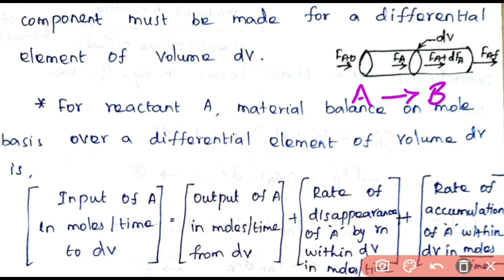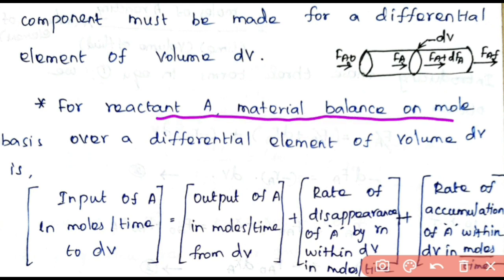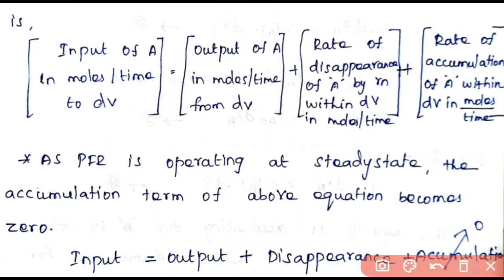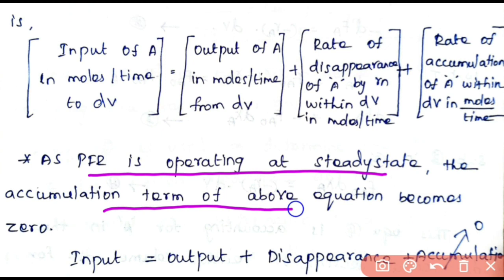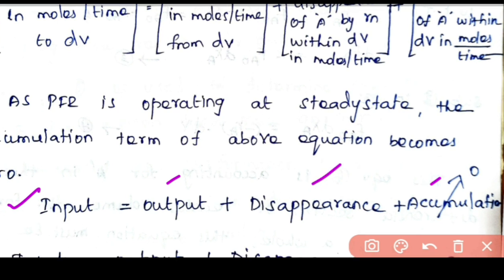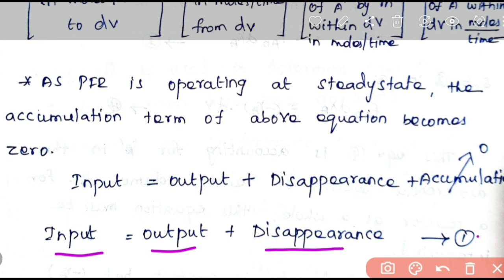To derive the performance equation, we consider a single homogeneous reaction A → B, where A is the reactant and B is the product. For reactant A, the material balance on a mole basis over a differential element of volume dV is: input of A = output of A + rate of disappearance of A by reaction within dV + rate of accumulation of A within dV. Since PFR operates at steady state, the accumulation term becomes zero, giving: input = output + disappearance (Equation 1).